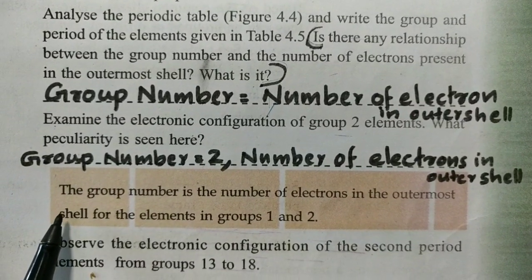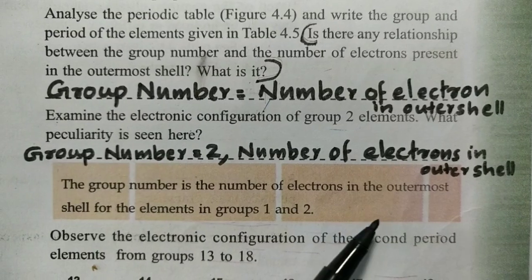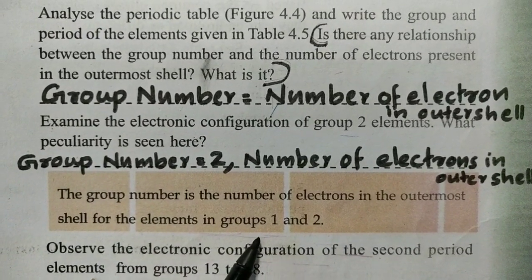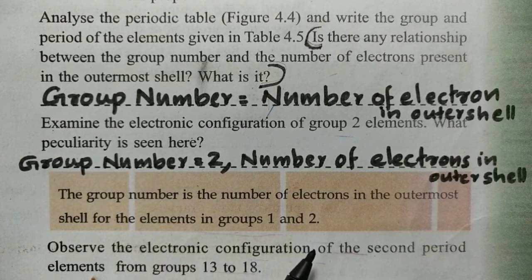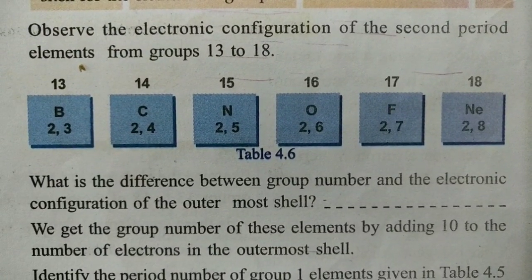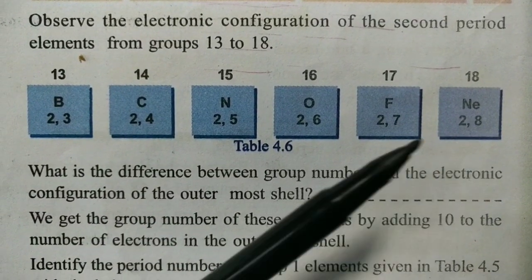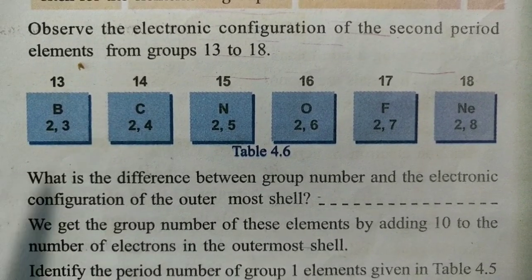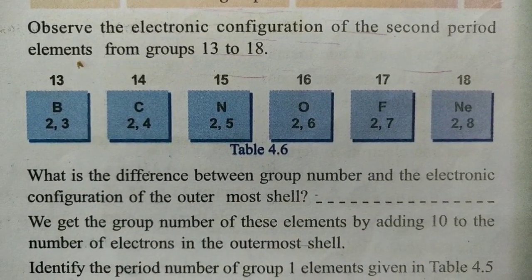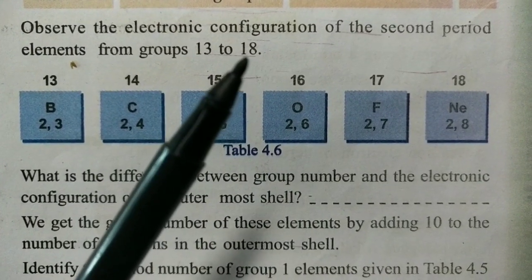Group number is the number of electrons in the outermost shell for group one and group two elements. The two elements here are a pattern. I can read that pattern — it's a pattern.